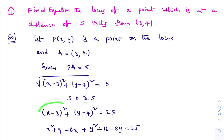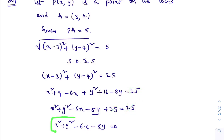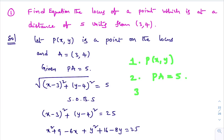Expanding: x² + 9 − 6x + y² + 16 − 8y = 25. Simplifying: x² + y² − 6x − 8y + 25 = 25. The 25s cancel, giving x² + y² − 6x − 8y = 0. This is the equation of the locus. The three key steps are: take P(x, y) on the locus, identify the geometrical condition (here PA = 5), write it in equation form, and simplify to get the equation of locus.